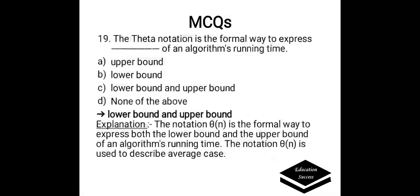The theta notation is the formal way to express dash of an algorithm's running time. Options: a) upper bound, b) lower bound, c) lower bound and upper bound, or d) none of the above. Correct answer is lower bound and upper bound. The theta notation expresses both the lower bound and upper bound of an algorithm's running time and is used to describe the average case. It is also known as tight bound.